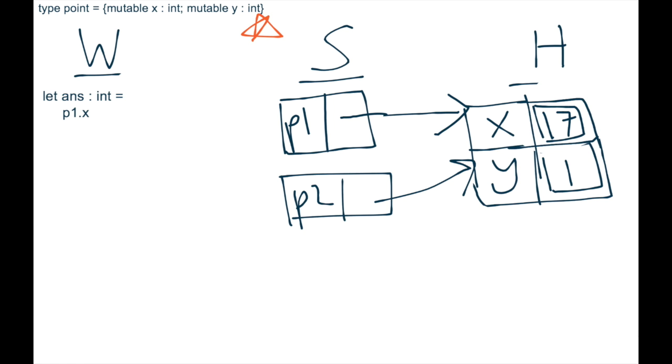So now we have just a simple let expression with P1.x on the right. Let's get this to be a value. We do the same thing we did before.